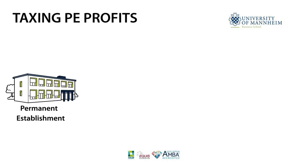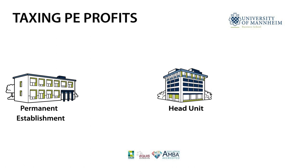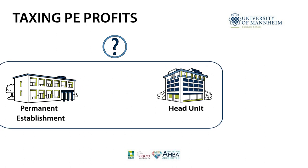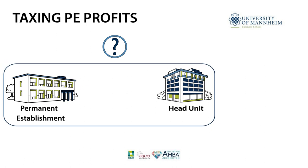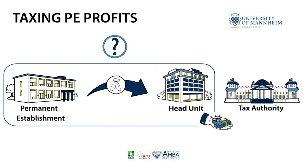You may wonder how the permanent establishment will be taxed. As the permanent establishment is not a separate legal entity, it is not subject to any tax liability. Instead, its profits are allocated to the head unit, which pays the tax. This is similar to the taxation of a partnership if it is treated transparently for taxation purposes.